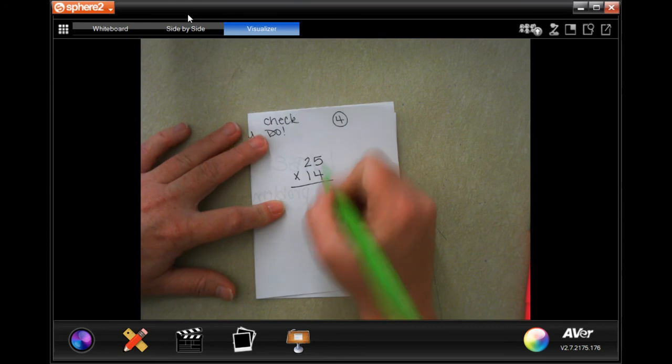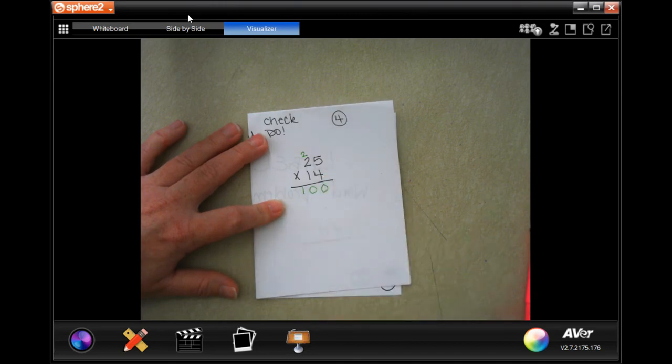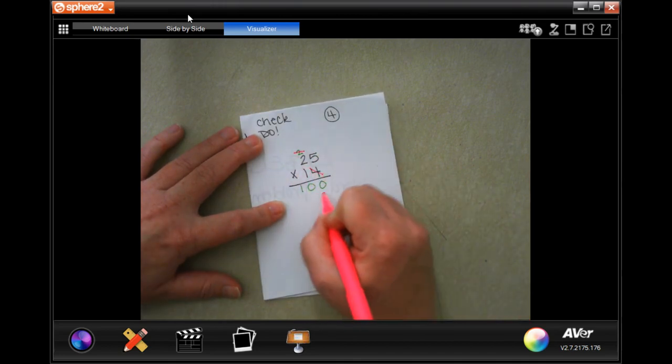4 times 5 is 20. Carry your 2. 4 times 2 is 8. Plus 2 more is 10. Now, we go to tick, tack, toe.